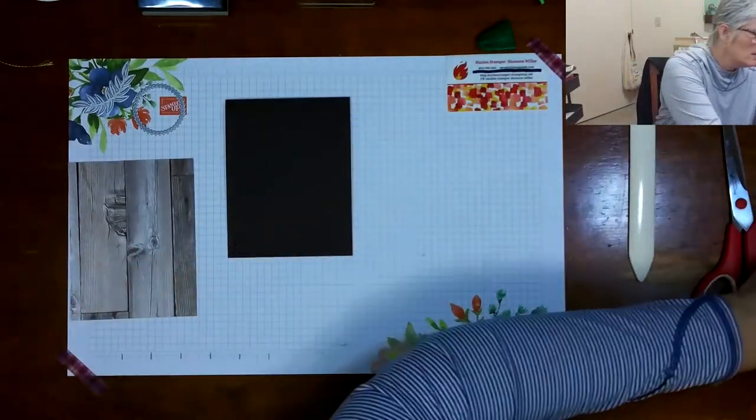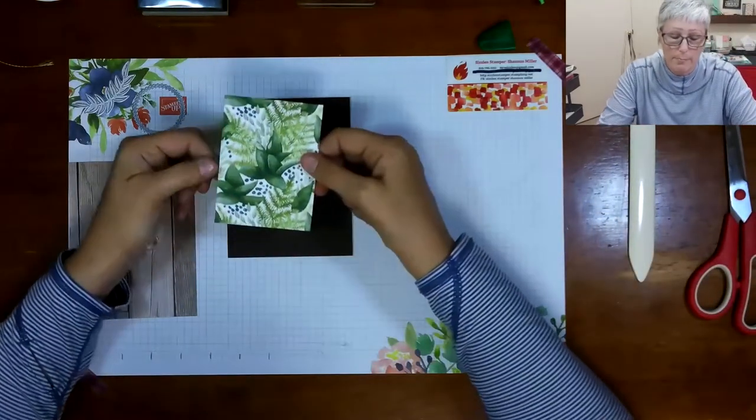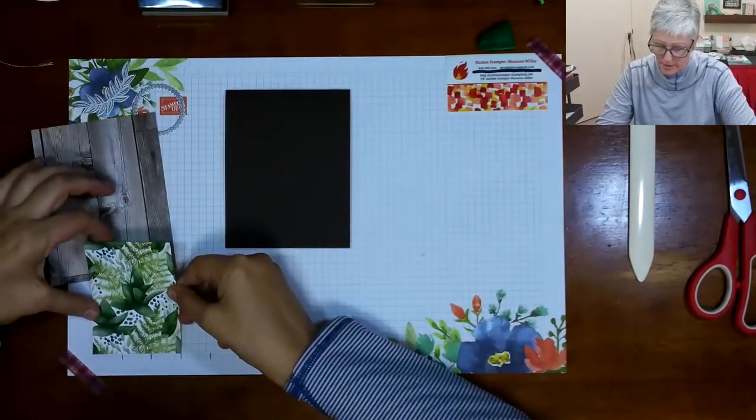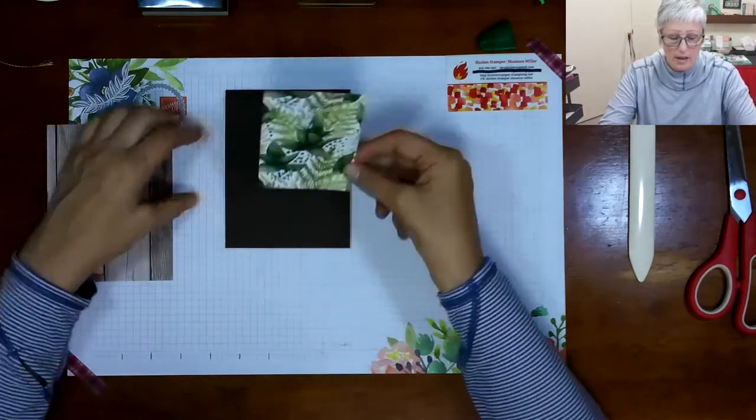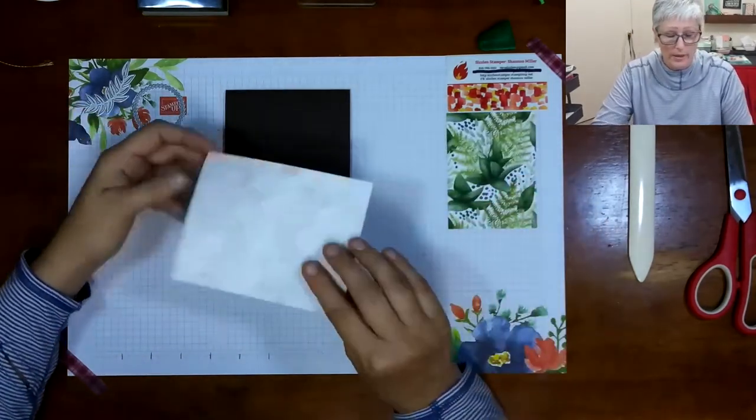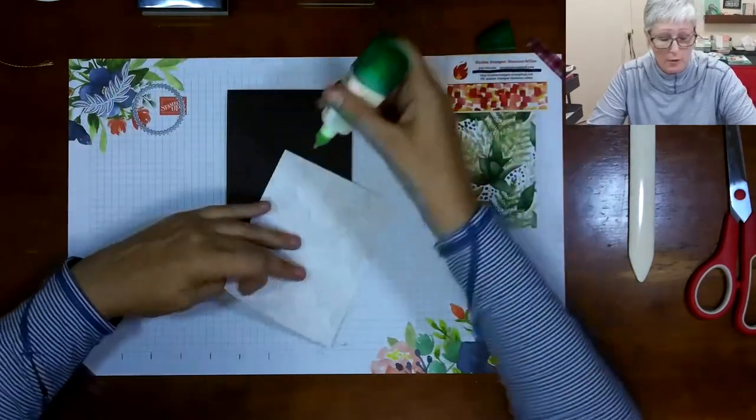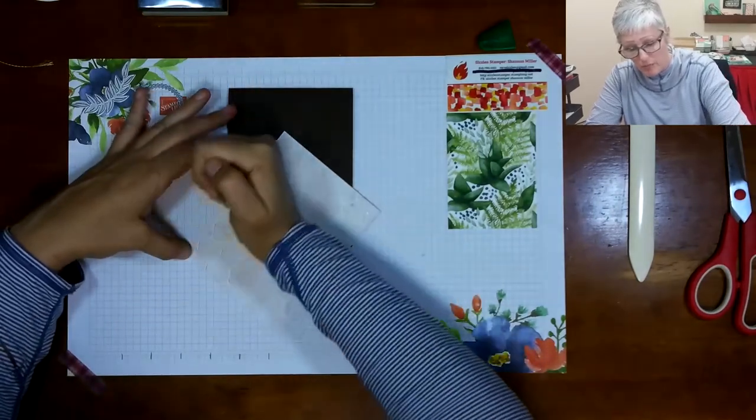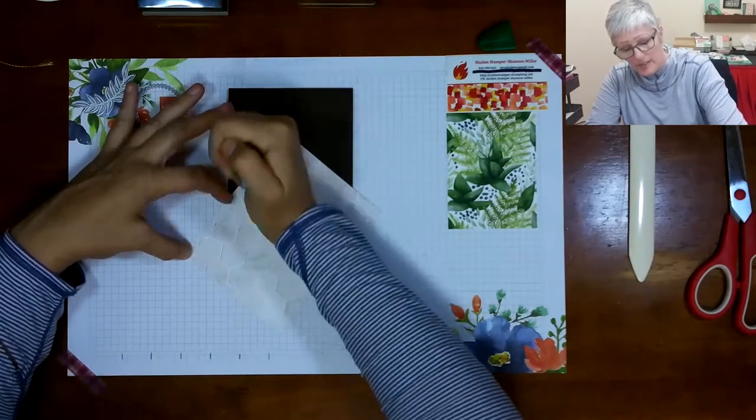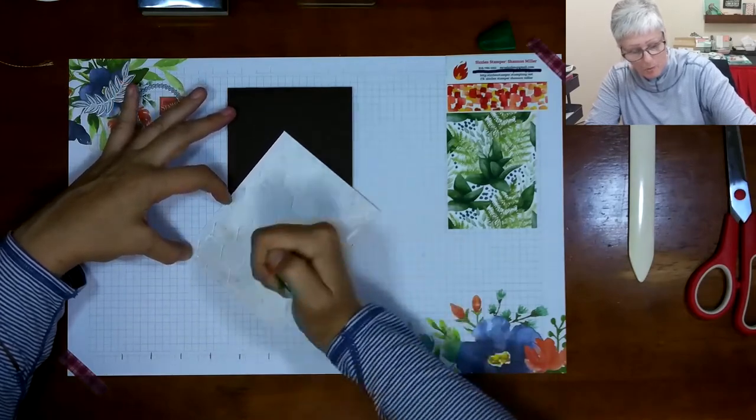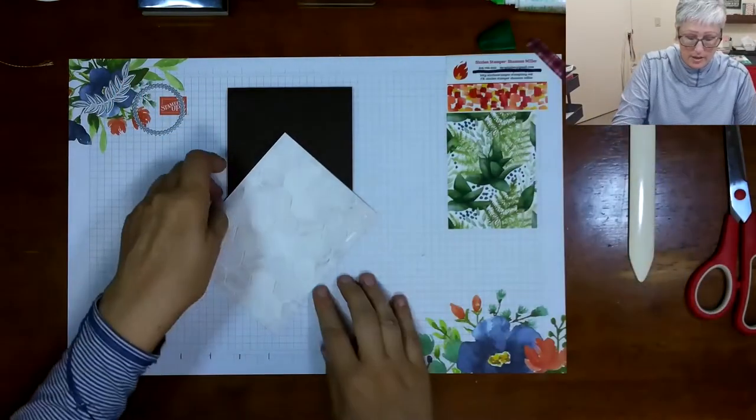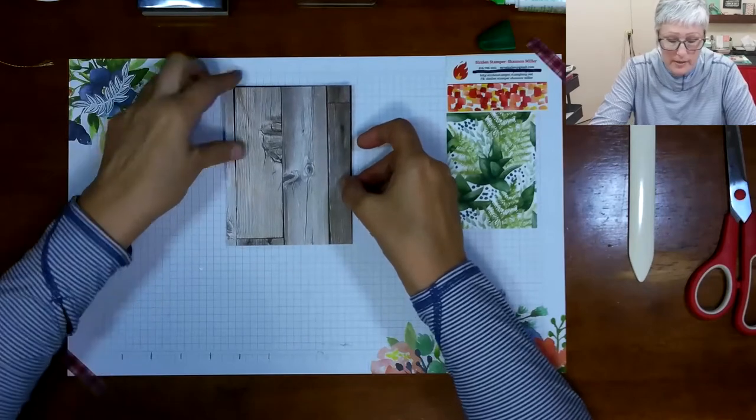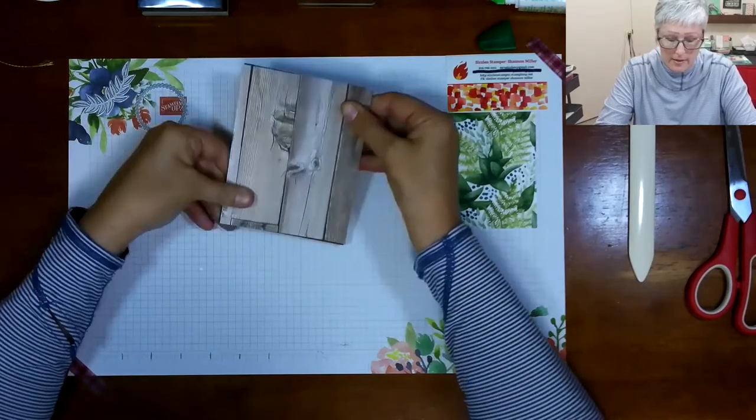The other things I'm using are some of the Forever Greenery designer series paper. I've cut this down to three inches by four inches. This layer is going to be much smaller than the barn layer because I'm really using it as a focal point. I'm going to glue my piece of wood designer series paper and it is going to completely cover the front of that Early Espresso.